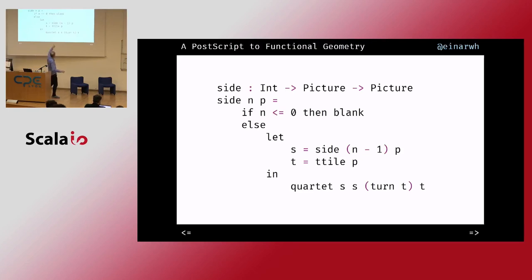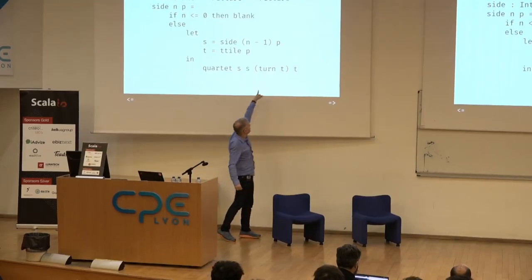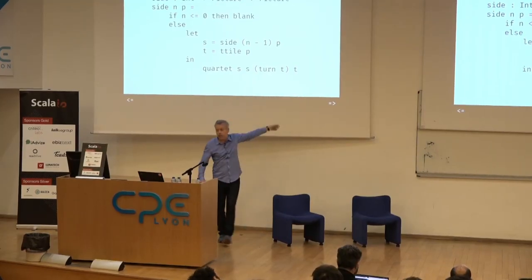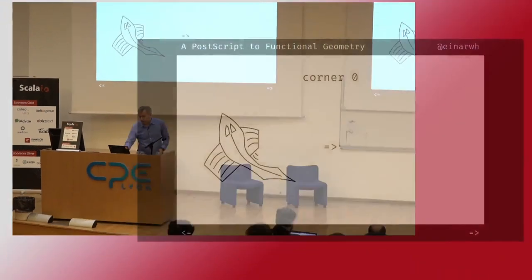That's going to look like this. The base case is blank; otherwise we do some recursion using this quartered thing. For step one it was a turned t-tile and a t-tile, with blanks on top.